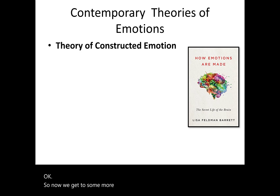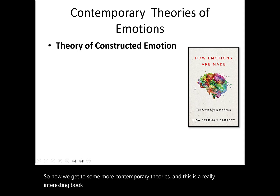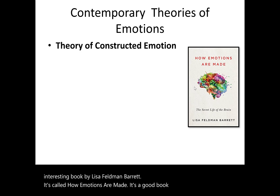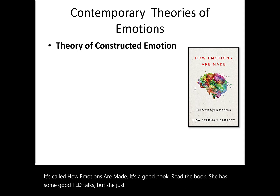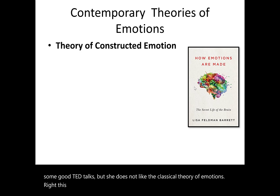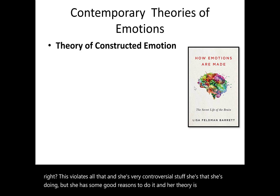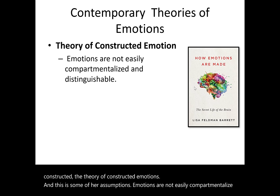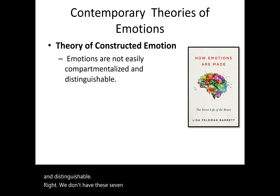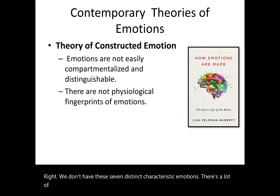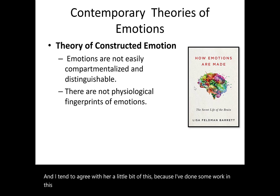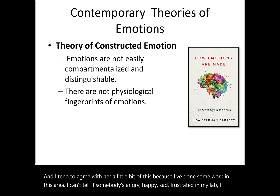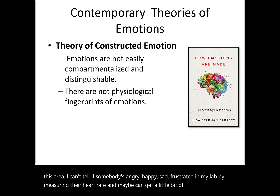Now we get to more contemporary theories. Lisa Feldman Barrett's book 'How Emotions Are Made' presents the theory of constructed emotions. She does not agree with the classical theory of emotions, and it's controversial but well-reasoned. Her key assumption is that emotions are not easily compartmentalized and distinguishable — we don't have seven distinct characteristic emotions with physiological fingerprints.